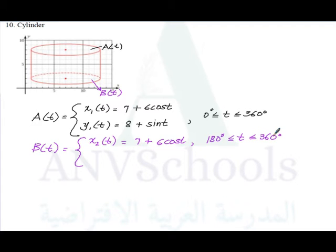But y₂(t) is equal to 2—it's located at 2 plus the radius is still 1, so sine t. And it could be found from 0 to 360 degrees.